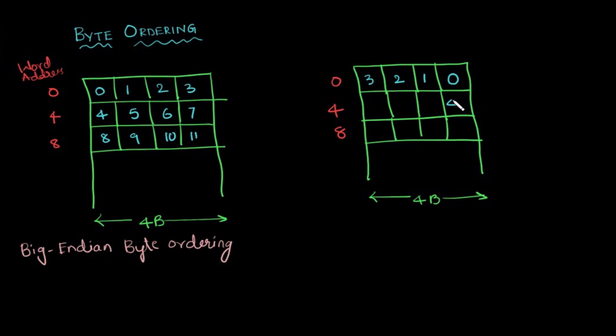These bytes are ordered in the reverse direction in each word. So, the 4th byte starts here, 5th, 6th, 7th, 8th, 9th, 10th and 11th. Now this scheme is called little endian byte ordering scheme.